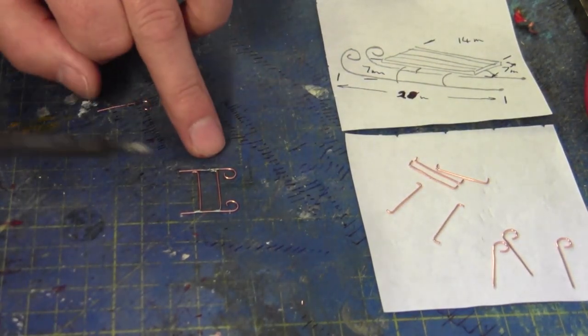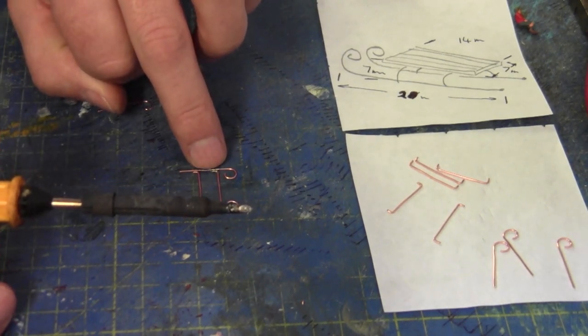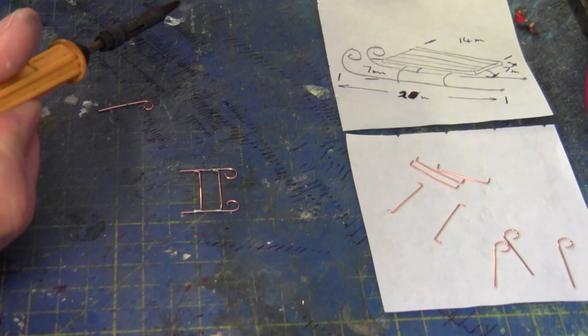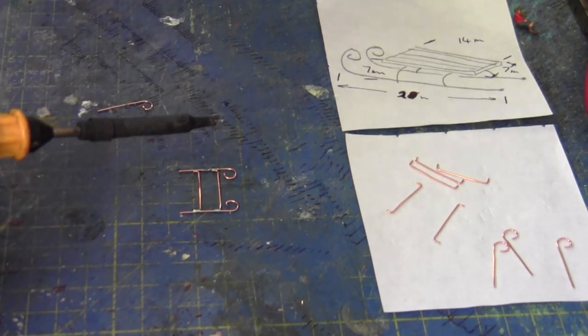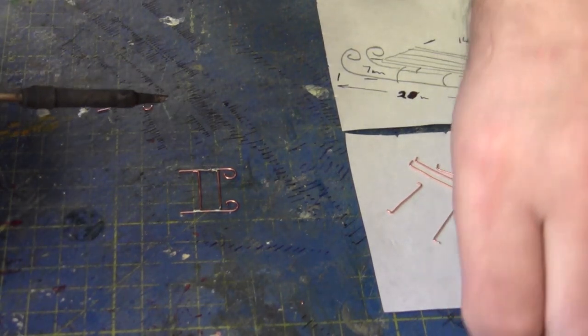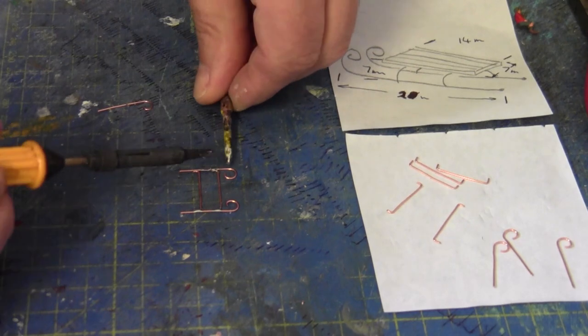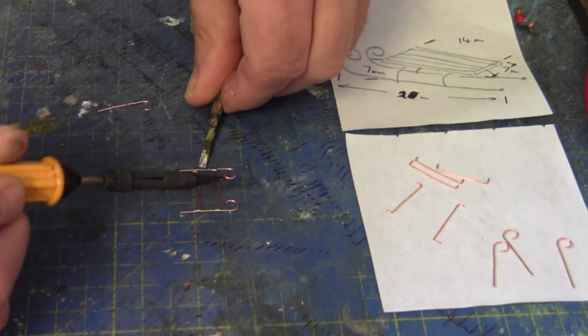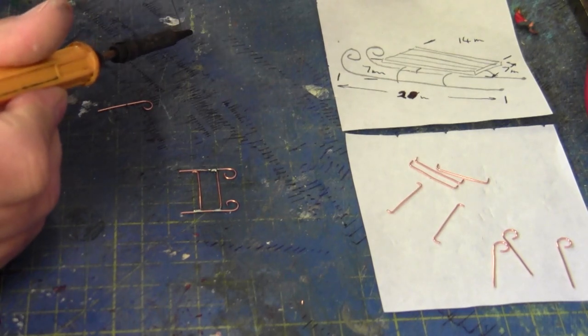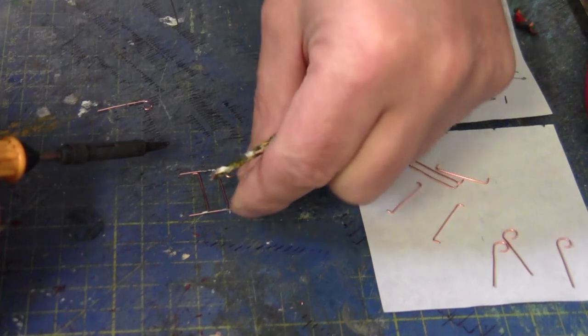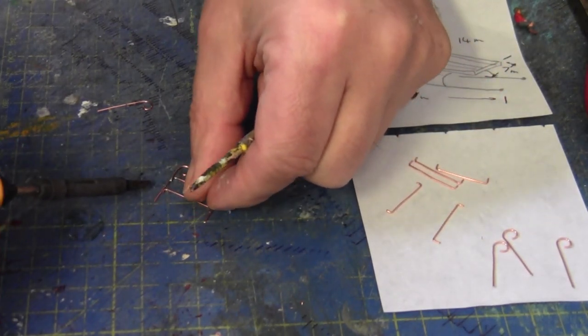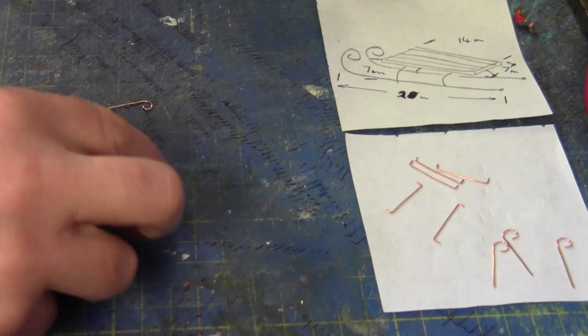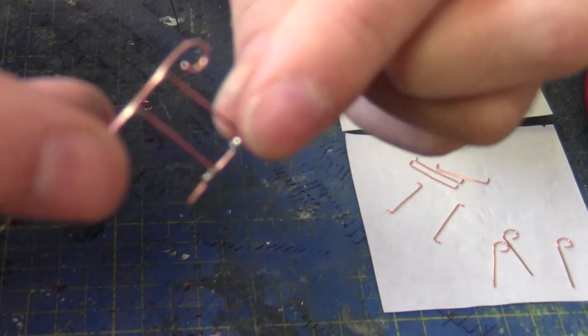So before you glue the other side on just make sure the edges are nice and square and your two supports are parallel to each other. And here we are. That's ready to be folded.